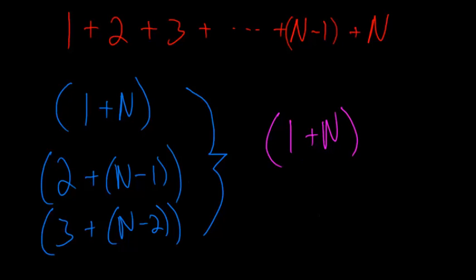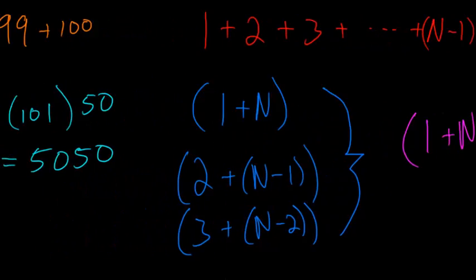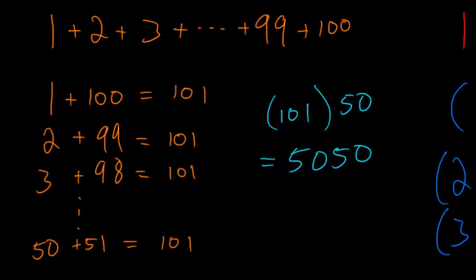So now we just need to figure out how many times do we have to add this number. So let's go back to our first example, where we added the first 100 numbers. So we carried this pattern out, and so we got to 50 plus 51. So we had to add this number 101 50 times.